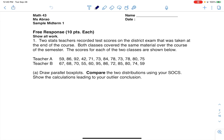Hey everyone, let's take a look at our first free response question. We've got two stats teachers who recorded test scores on the district exam that was taken at the end of the course. Both classes covered the same material over the course of the semester. The scores for each of the two classes are shown below. We're asked to draw some box plots, compare the SOCs, and make sure we show the work leading to our outlier calculation.